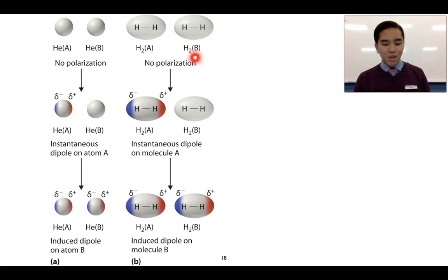So we've got hydrogen molecules here, A and B, and hydrogen molecule A, you can see, has formed a temporary dipole. Because the electrons are randomly moving, they're now residing more on this side, making this end of the molecule partially negative, and this end becomes partially positive.